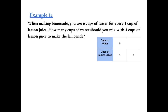Example 1. When making lemonade, you use 6 cups of water for every 1 cup of lemon juice. How many cups of water should you mix with 4 cups of lemon juice to make lemonade? We can use a ratio table. For every 1 cup of lemon juice, we need 6 cups of water.